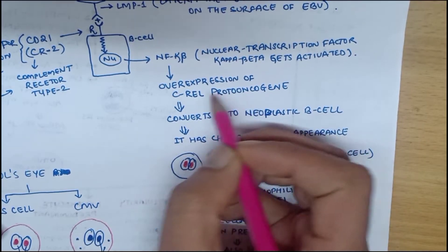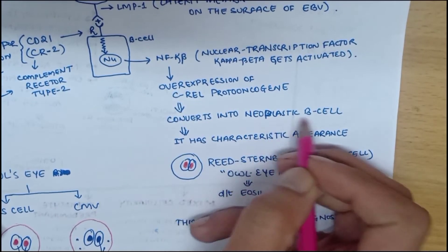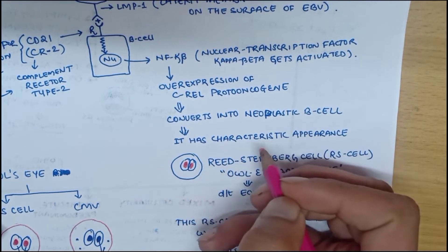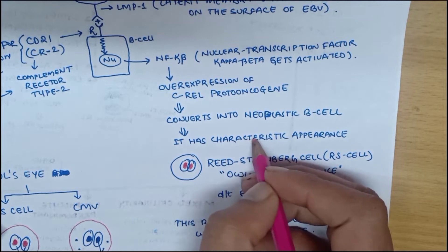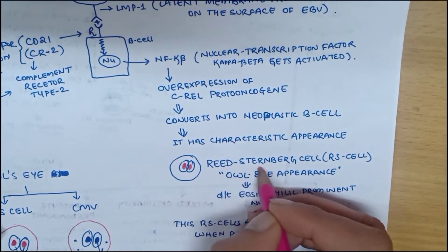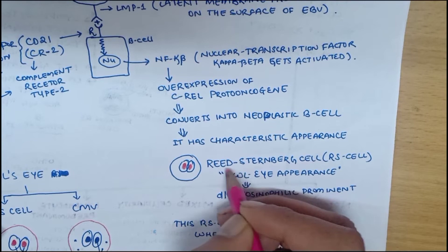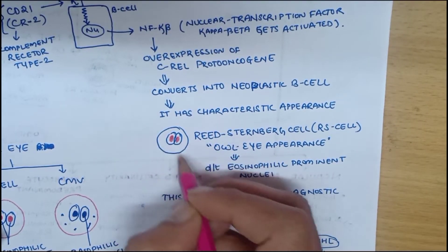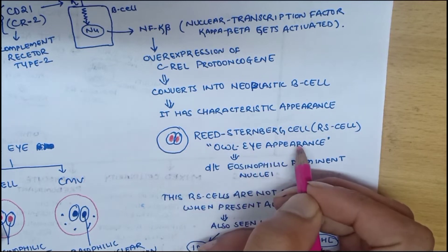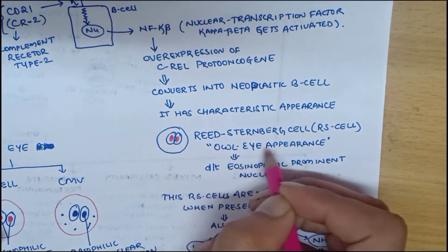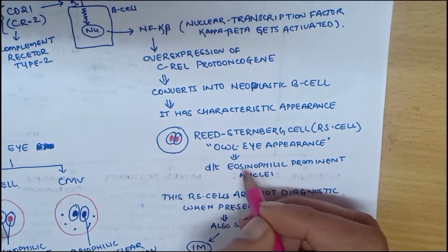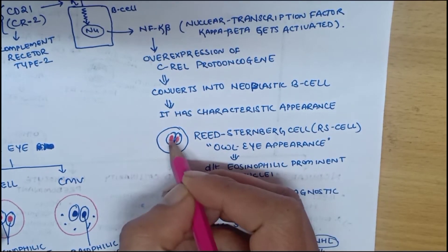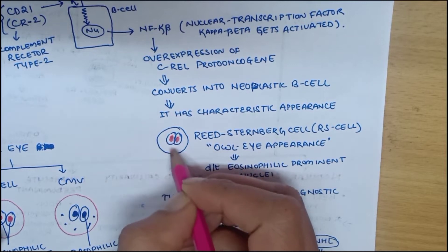This neoplastic B cell has a characteristic appearance: the Reed-Sternberg cell. Reed-Sternberg cells have mirror-like nuclei that look like an owl eye appearance. This owl eye appearance is due to eosinophilic prominent nucleoli.